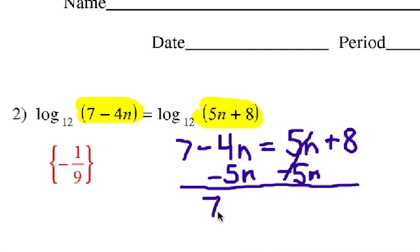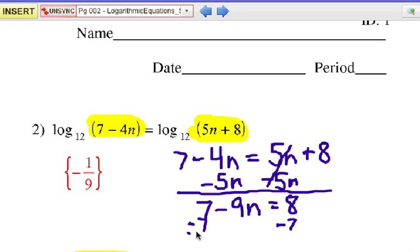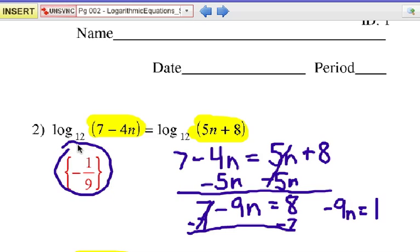Let's go ahead and subtract 7 from each side. And that will give us negative 9n equals 1. We're going to divide each side by negative 9, and that's why the answer is there, as shown. Okay, I hope you're doing alright.